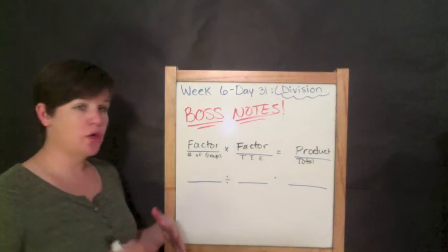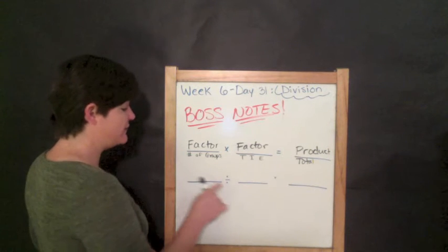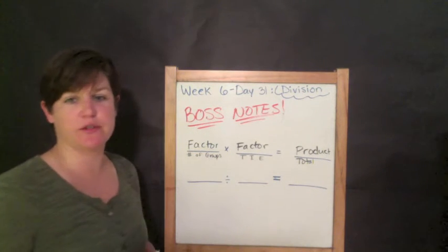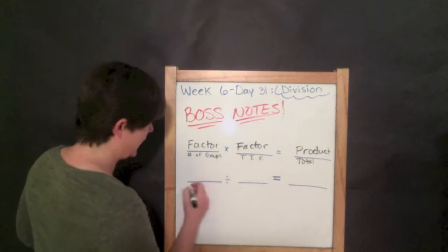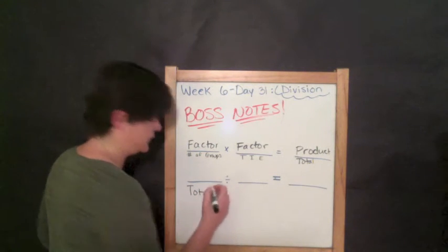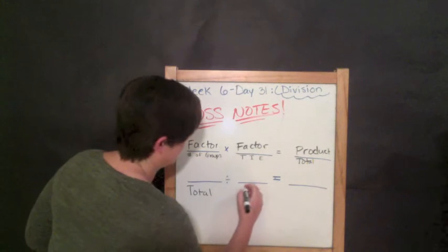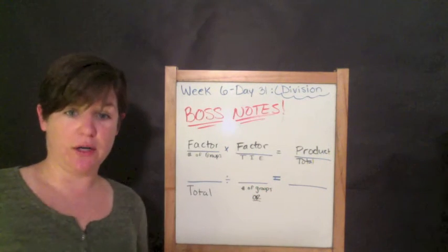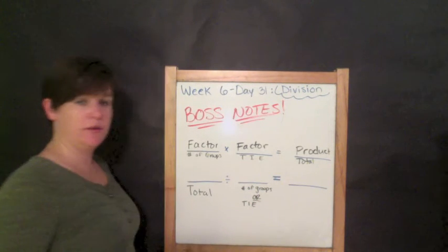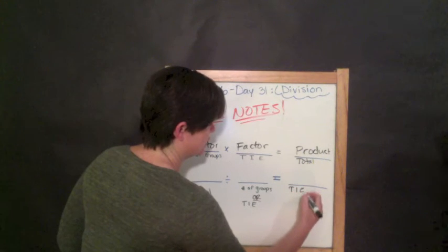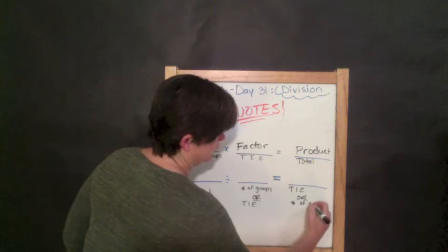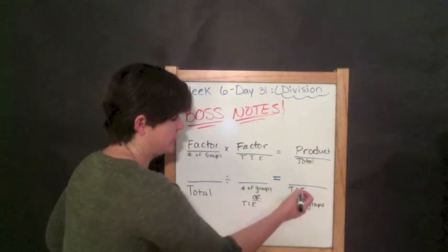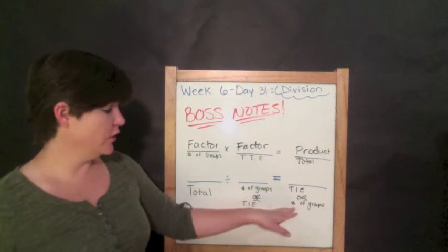Well, now we are switching up the order a little bit for division. So when we divide, this is the division symbol right there. When we divide, we're taking the total and dividing it by the number of groups or the things in each to get the things in each or number of groups. It could be either or. So if we're searching for the number of groups, we're finding the things in each. If we're dividing into the things in each, we are looking for the number of groups.